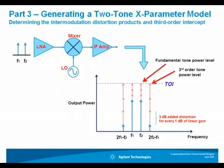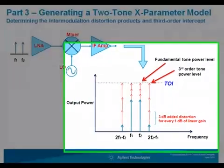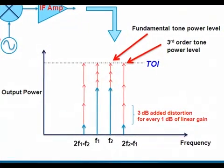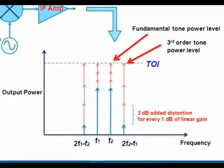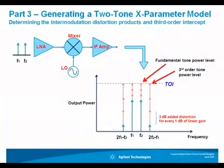As we keep doing this, the third-order terms become equal in power level to the fundamental term and this theoretical output power level becomes our second spec for linearity of a system. It is called the third-order intercept or TOI. This spec is the output power at which the third-order distortion products become equal in amplitude to the main signal power.